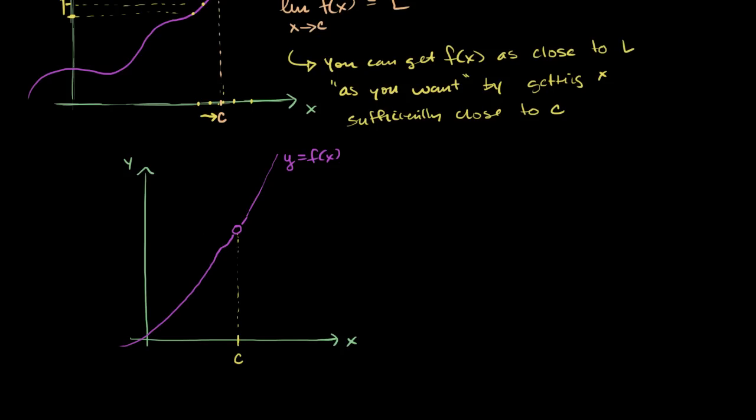So conceptually, we get the gist already. We already get the gist that this right over here is L. But what is this definition saying? It's saying that you can get f of x as close to L as you want. So if you tell someone, I want to get f of x within a certain range of L,